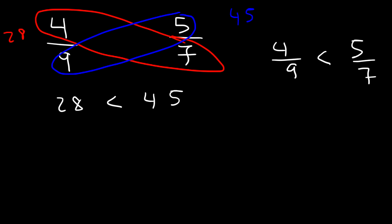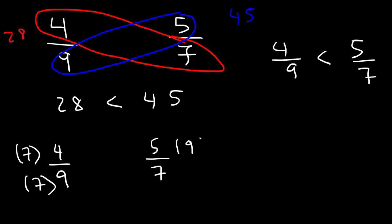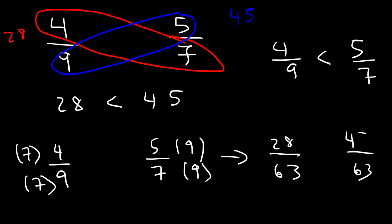Let's confirm it by getting common denominators. I'm going to multiply 4 over 9 by 7 over 7, and multiply 5 over 7 by 9 over 9. This gives a common denominator of 7 times 9, or 63. 7 times 4 is 28, and 5 times 9 is 45. Notice that we get the same numbers. Therefore, 28 over 63 is less than 45 over 63.